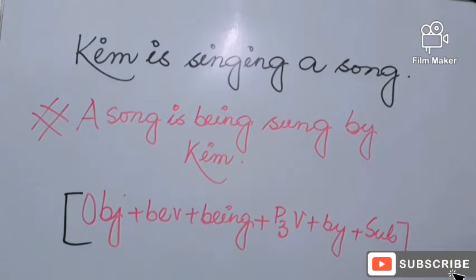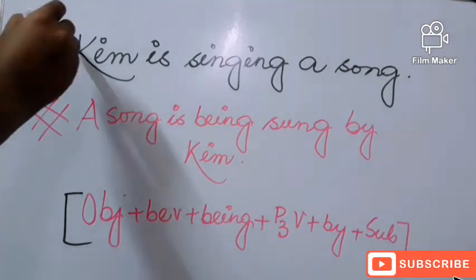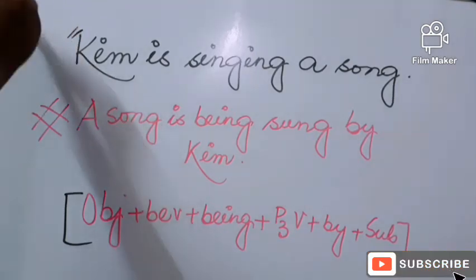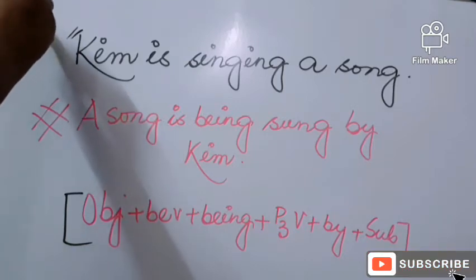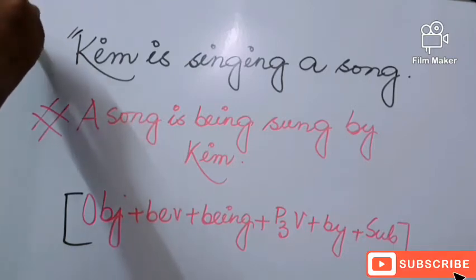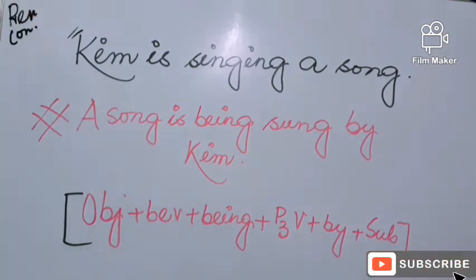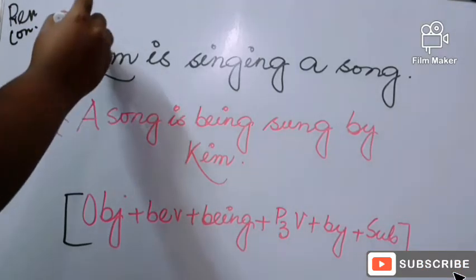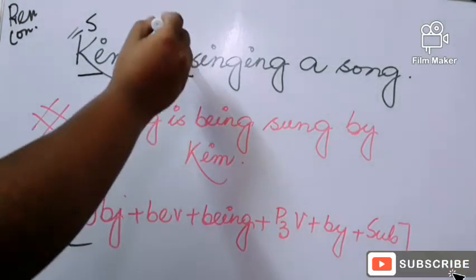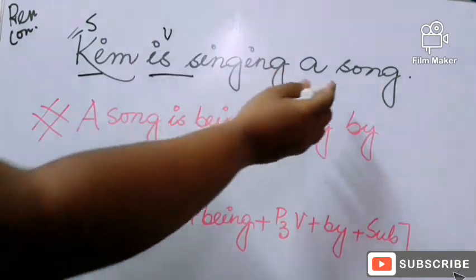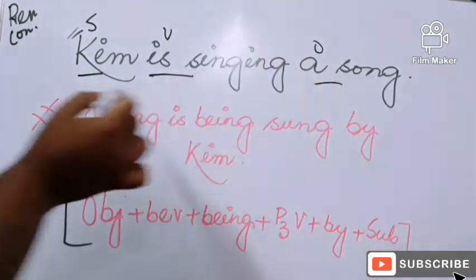Now we shall take the second example: 'Kim is singing a song.' This sentence is written in present continuous tense. First we shall identify the subject, verb, and object of the sentence. Kim is the subject, 'is singing' is the verb, and 'a song' is the object of the sentence.